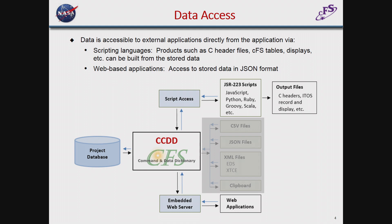The scripting languages supported include any of the JSR 223 scripting languages — there are a couple dozen of those. It has been specifically tested with JavaScript, Python, Ruby, Groovy, and Scala, but others should work as well. The program comes with a number of sample scripts in these languages for building header files and similar outputs, giving the user something to start with rather than starting from scratch. The other method of getting data from the application is via an embedded web server. You turn that on and make a request to the application, which pulls the data and sends it back to the web application in JSON format.